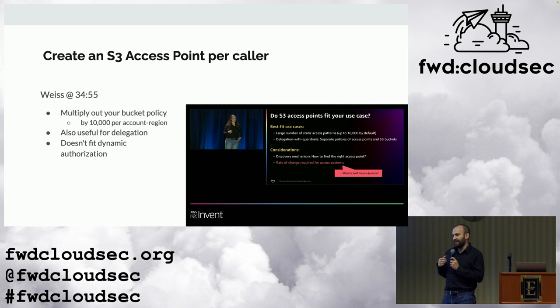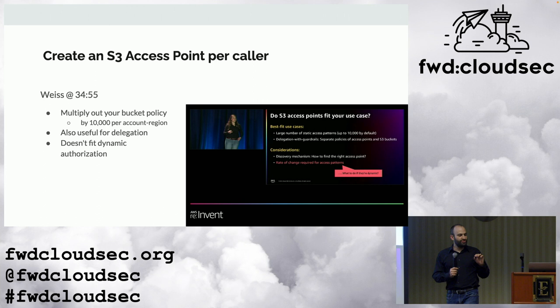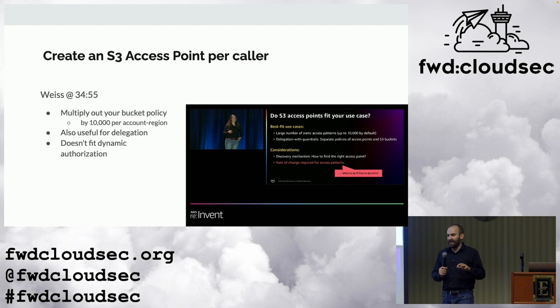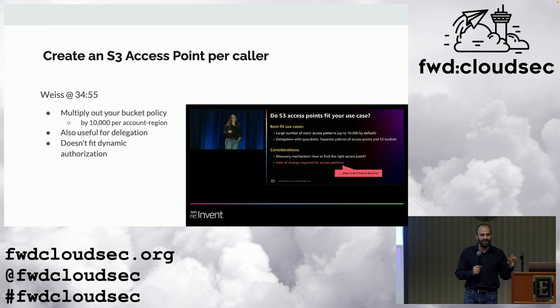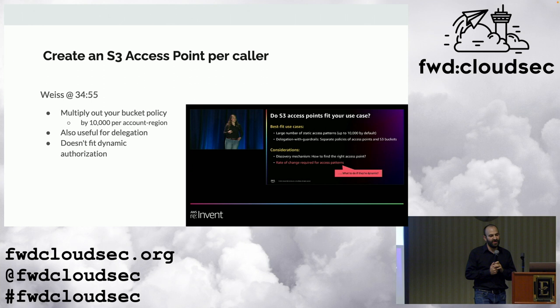S3 access points are another really good way to provide delegation. One team builds an S3 bucket with a coarse policy, and another team takes that coarse policy and applies a more granular one by putting an S3 access point in front of it. You get delegation plus the ability to multiply out the quantity of bucket policy you can apply — you can have 10,000 access points per account-region, with about 6 kilobytes of access point policy each. The problem is complexity, and it's still not dynamic enough for a high rate of change.